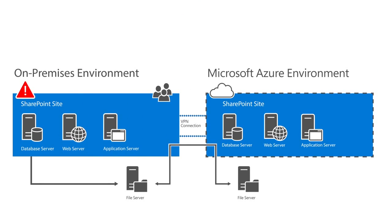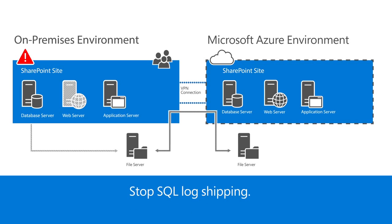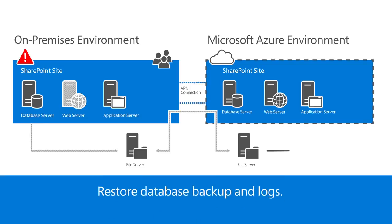When trouble strikes, switch the users to Azure so they can keep working. The process works like this: Stop incoming user traffic to the on-premises SharePoint web server. You can do this by disabling DNS entries or shutting down the web server. Stop the SQL log shipping to Azure. Restore the SQL backup and replay the transaction logs in the order they were created using the replicated files.